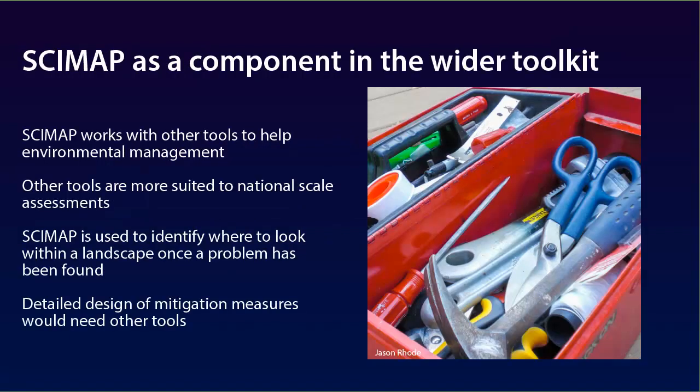CIMAP sits within a wider toolkit available for environmental management. It is not really suitable for national-scale mapping and modelling — this is where tools such as SiteKick or PIT, with their coarse grid resolutions, come into their own. You would then bring in CIMAP to make more detailed predictions on about a 5-metre grid within identified catchments. Once you have identified a set of options, you may then want to look at more complex models to design the detail of the mitigation works.